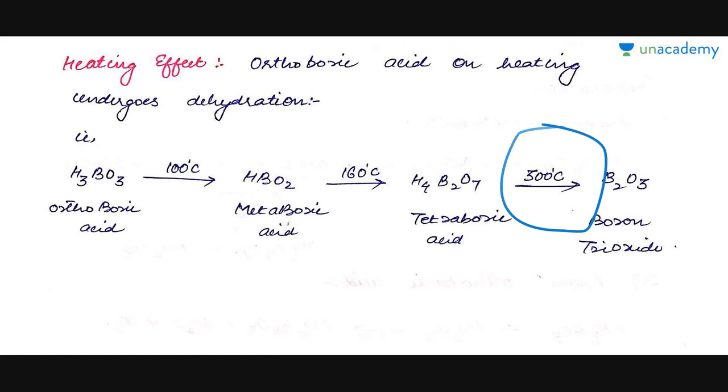It dimerizes with the removal of some water molecules. On heating this compound up to 300 degrees centigrade we get B2O3, that is boron trioxide.